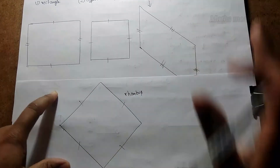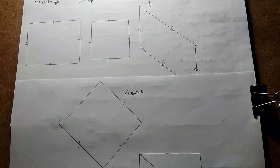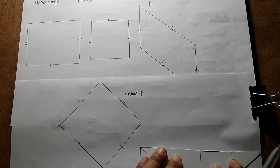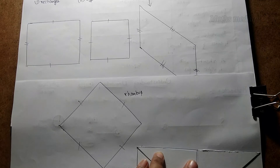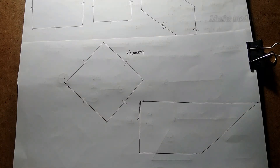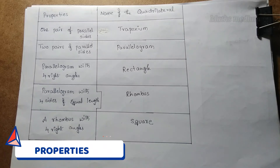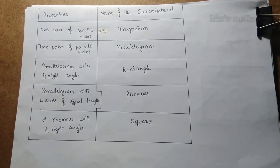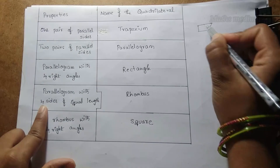Coming to the trapezium: take two 45-45 degree set squares and another set square. The shape is like this — trapezium. In a trapezium, we have only one pair of parallel sides, and those are the opposite sides. I am drawing the outer shape. In a trapezium, we don't have any equal sides, but it has four sides.